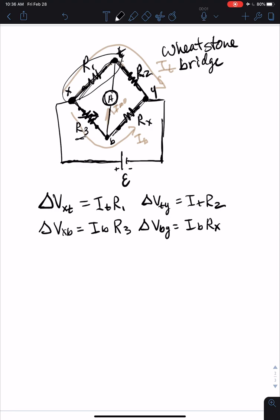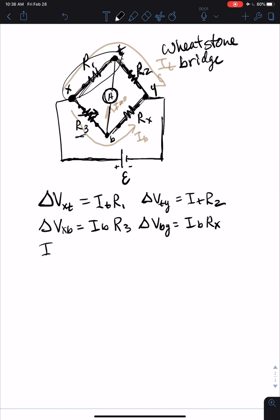So a reminder here, the whole point of using this Wheatstone bridge setup is that the current goes to zero between the top and the bottom. So the top and the bottom have to have the same voltage. If that's true, if the top and the bottom have the same voltage, then Itop R1 equals Ibottom R3. That's helpful. And Itop R2 equals Ibottom Rx. That's helpful.